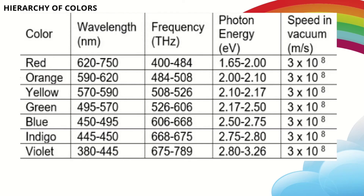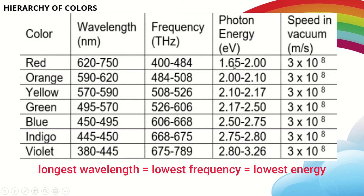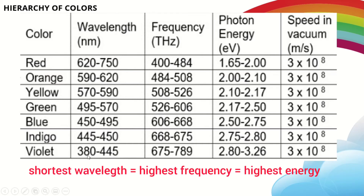Here is a detailed data about the hierarchy of colors, arranged from red to violet as in the rainbow. Wavelength goes from highest to lowest; frequency goes from lowest to highest. If the color has the longest wavelength, the frequency is lowest, and the energy is also lowest. Longest wavelength means lowest frequency and lowest energy. While shortest wavelength means highest frequency and highest energy. The more energy in the wave, the higher its frequency. The lower the frequency, the less energy in the wave. The longer the wave, the lesser the energy; the shorter the wave, the higher the energy.